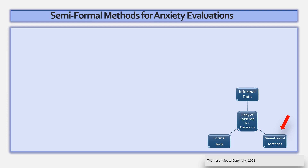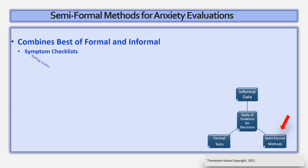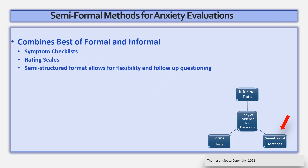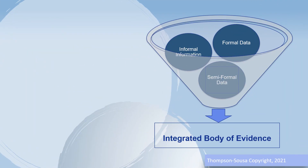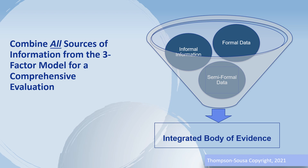The last leg of the assessment triad is the semi-formal methods area. Semi-formal methods combine the best of formal and informal methods. An example of a semi-formal method is a symptom checklist. Another example are rating scales. Semi-formal methods are effective because they have a semi-structured format, which allows for flexibility and follow-up questioning. They also have both quantitative and qualitative methods. Once a school team has collected formal data, informal information, and semi-formal data, the team should integrate all three sources for a comprehensive evaluation, which satisfies best practice as well as legal requirements.